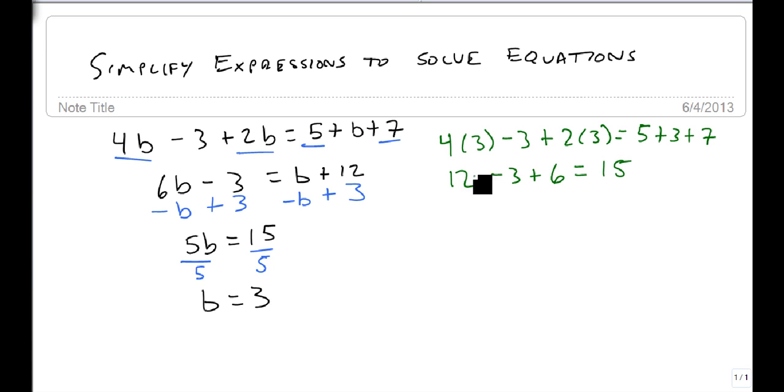On the left now, we can add and subtract. 12 minus 3 is 9. 9 plus 6 is 15. And notice we got 15 equals 15, so our answer checks out. And the only answer to this equation is b equals 3.